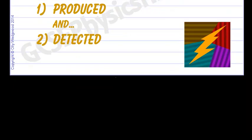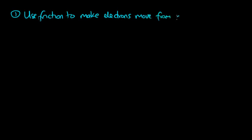So one of the ways of doing that is to use friction. Number one, we can say use friction to make electrons move from one material to another.